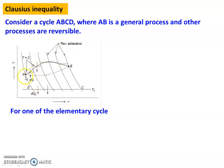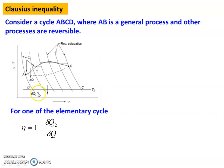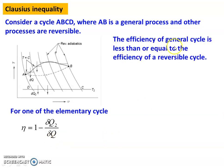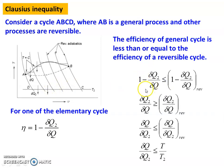Each strip is bounded by reversible adiabatic lines, and the curved region is converted into reversible isothermal lines, making each strip an elementary Carnot cycle. For one elementary Carnot cycle, efficiency eta equals 1 minus heat rejected by heat supplied, so eta equals 1 minus δQ2/δQ. The efficiency of the general cycle is less than or equal to the efficiency of the reversible cycle — the Carnot cycle efficiency is always the highest.